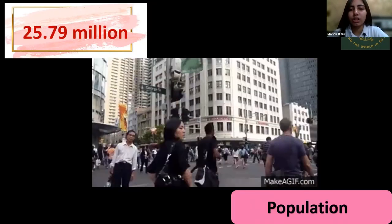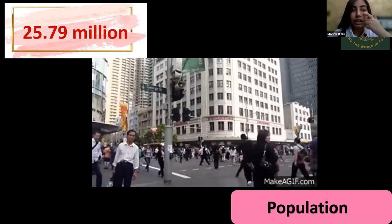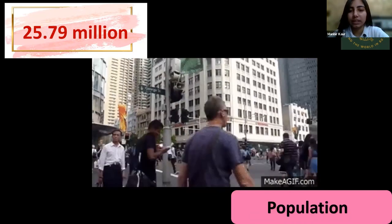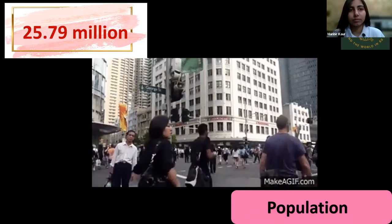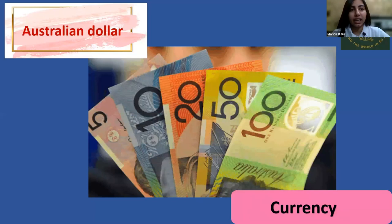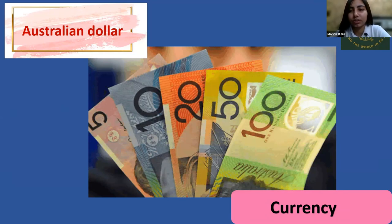The population of Australia is 25.79 million. The currency is the Australian dollar — here you can see a few bills: five dollar, ten dollar, twenty dollar, and one hundred dollar. These are the Australian dollar bills they use.